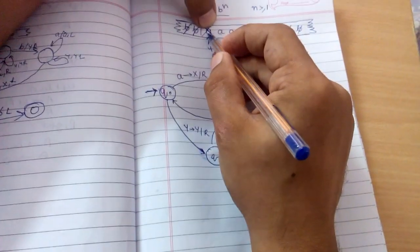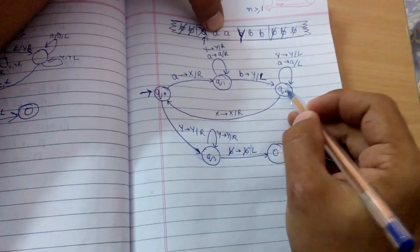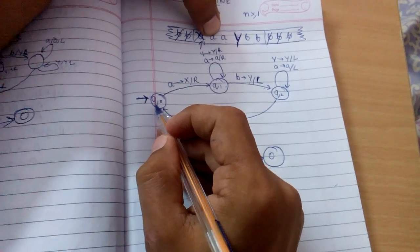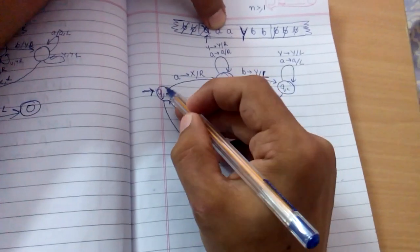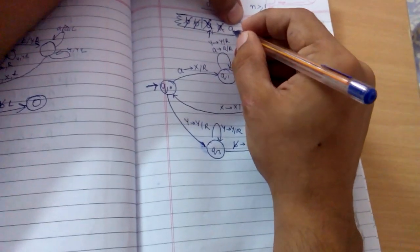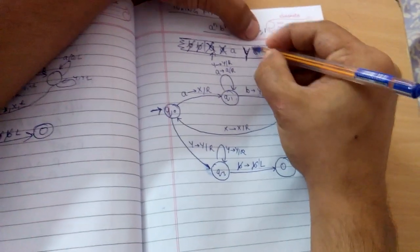When we encounter this x, we again move to the right - we are at q0 again. Then the same procedure repeats: we scan the 'a', change it to 'x', move again, and when we scan the first 'b' we change it to 'y' again.